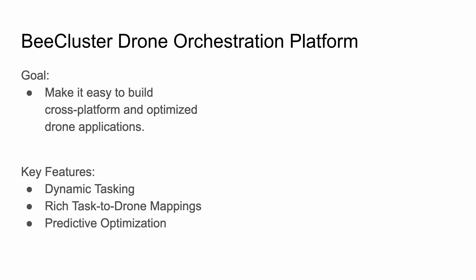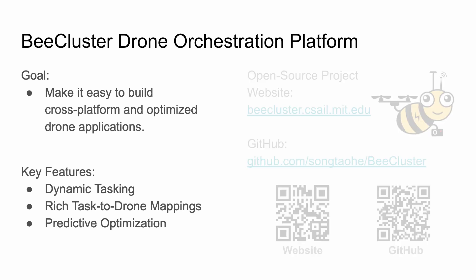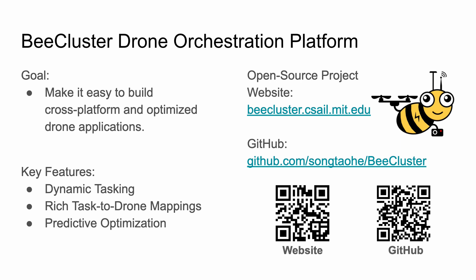In summary, the goal of our work is to make it easy to build cross-platform and optimized drone applications. To achieve this goal, B-Cluster explores the direction of drone orchestration and implements three key features: dynamic tasking, rich task-to-drone mapping options, and most importantly, predictive optimization. We have made our project open-source. If you are interested to learn more, please check our paper or visit our website. There are still a lot of open questions in the direction of drone orchestration platforms, so if you are interested in contributing to B-Cluster, please feel free to send us an email. Thank you.